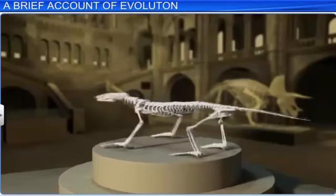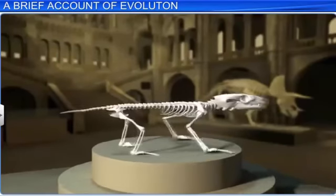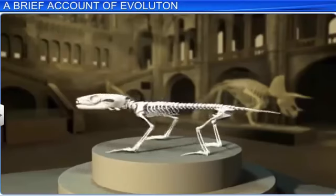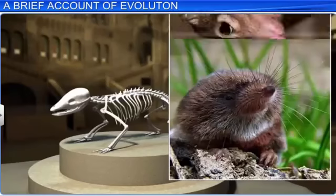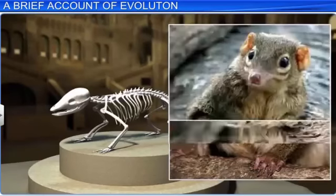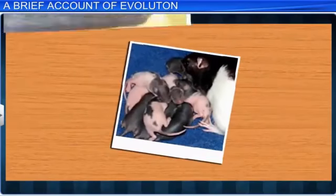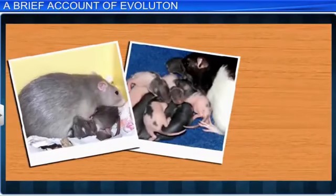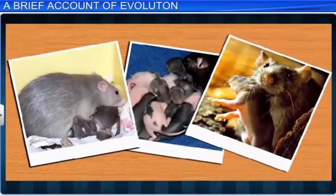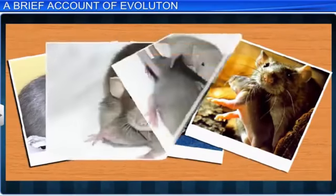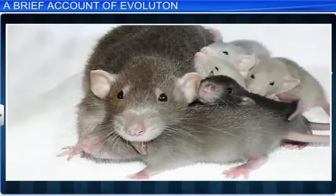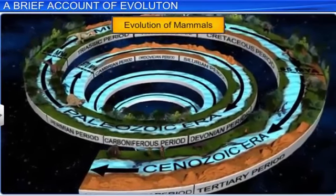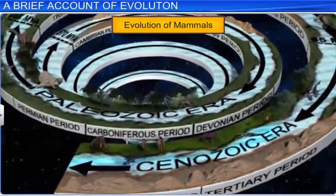Mammals have a backbone which encloses a network of nerves, which leads to a brain contained in a skull. Fossil evidence shows that the first mammals were like shrews. Mammals are characterized by viviparity — that is, they give birth to young ones, have mammary glands, and the unborn young are protected inside the mother's body. The evolution of mammals was a slow process that spanned across 70 million years.